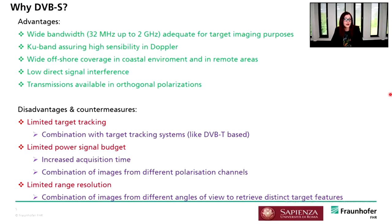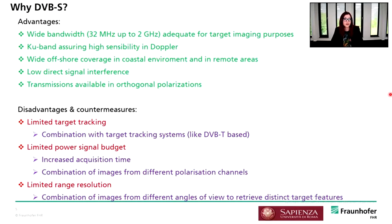Among different illuminators of opportunity, DVB-S provides wider bandwidth and higher sensitivity, along with wide offshore coverage — especially in coastal environments — compared to terrestrial transmitters, thus enabling maritime target imaging. Low direct signal interference and transmission available in both orthogonal polarizations are two further advantages. Of course, we must consider limitations related to target tracking, power signal budget, and range resolution. As countermeasures, we can combine with target tracking systems, increase acquisition time, and combine images from different polarimetric channels and different angles of view.